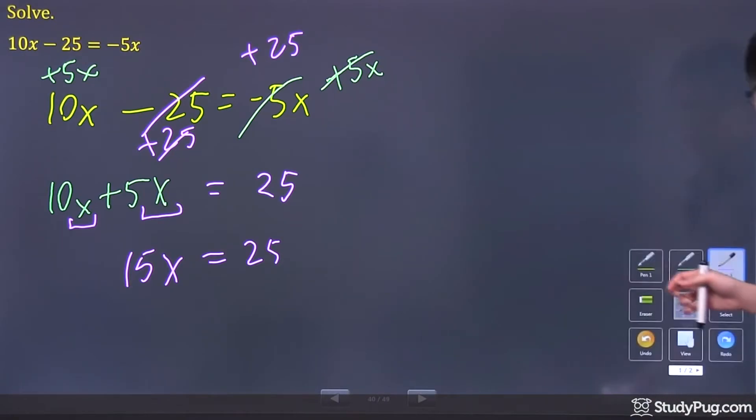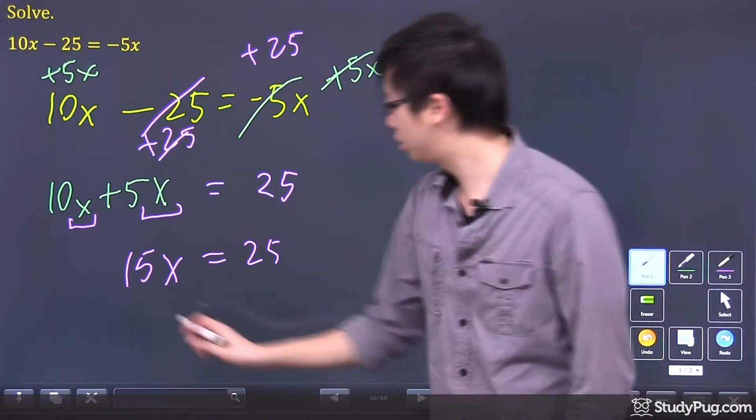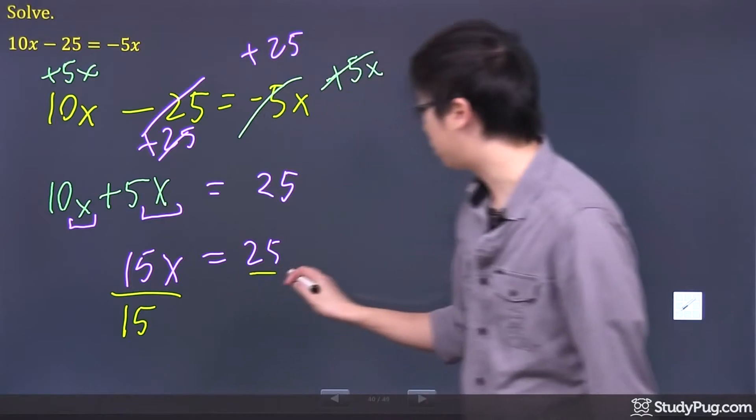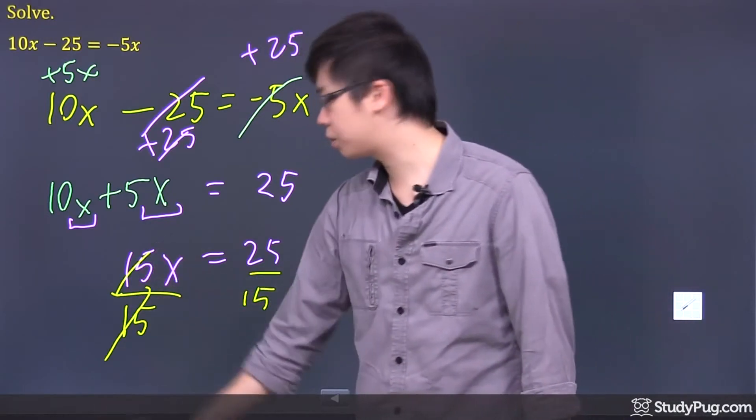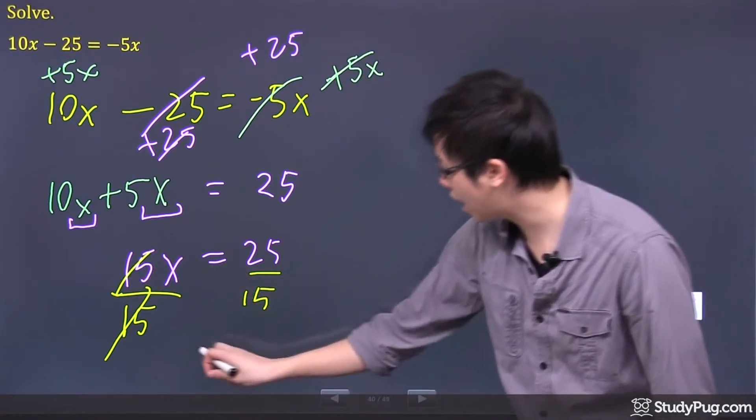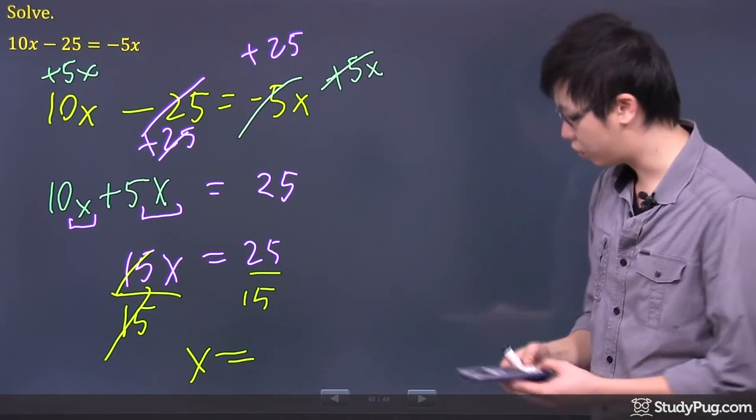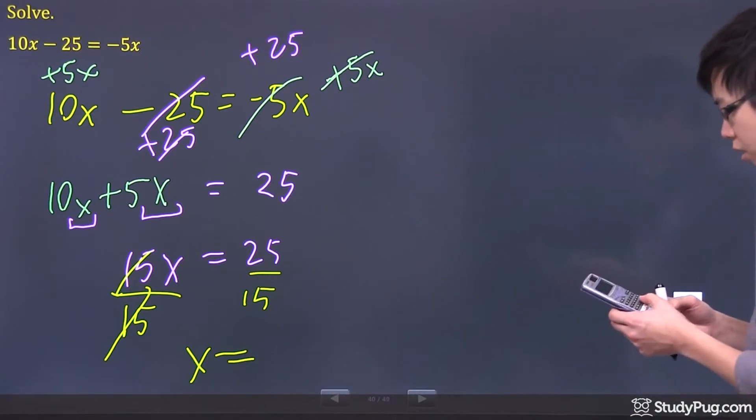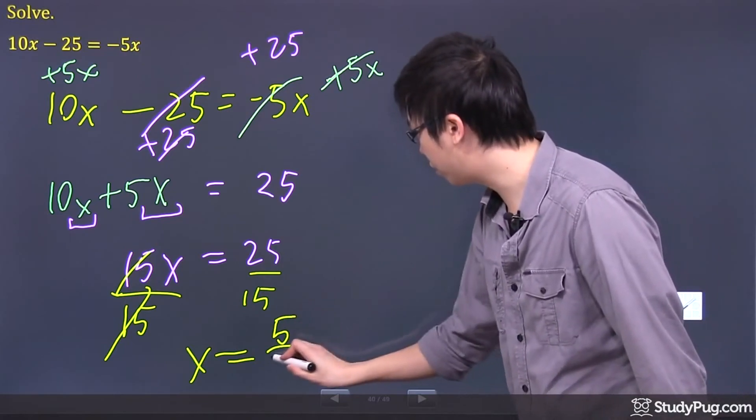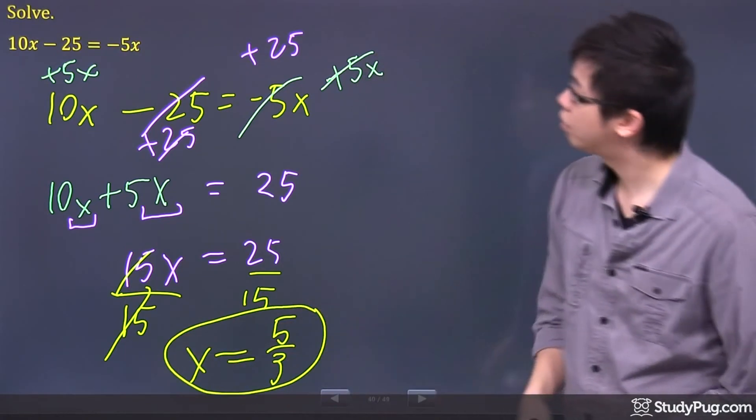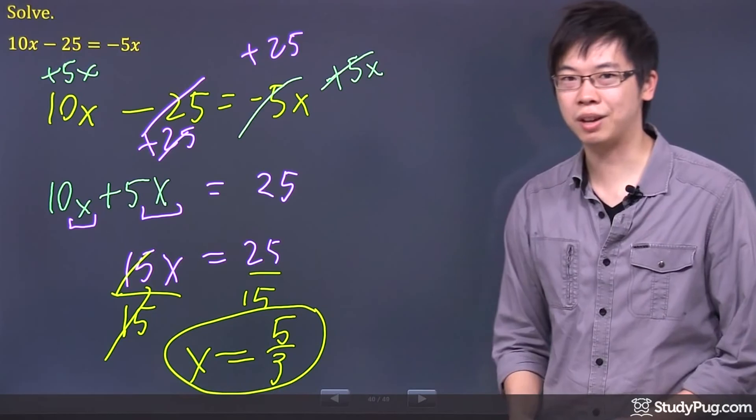For the very last step right here, to solve for x, get rid of the 15. How do I do that? Divide both sides by 15. That gets rid of the x, you're left with just 25 over 15. And I think we can reduce that down to 5 over 3. That is your final answer for this question. Thanks for watching.